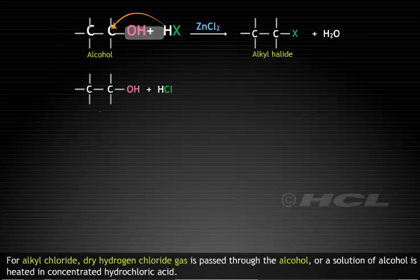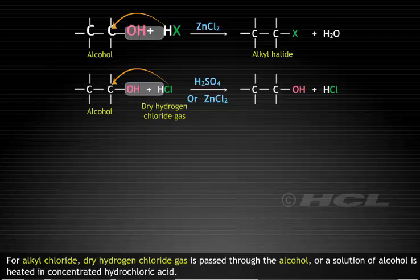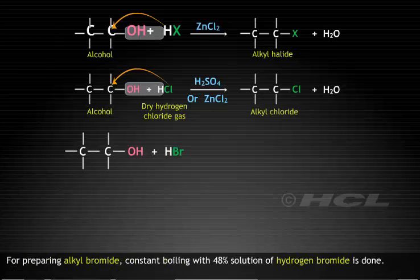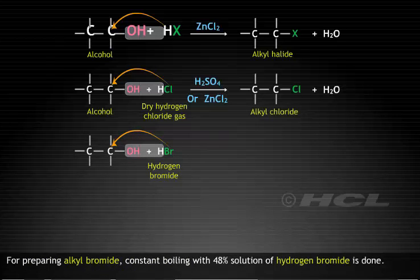For alkyl chloride, dry hydrogen chloride gas is passed through the alcohol or a solution of alcohol is heated in concentrated hydrochloric acid. For preparing alkyl bromide, constant boiling with 48% solution of hydrogen bromide is done.